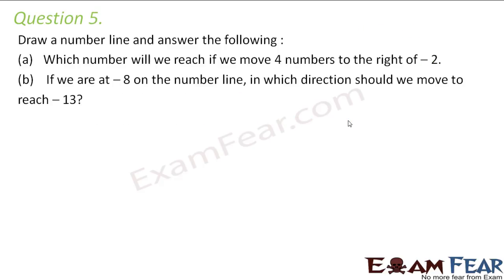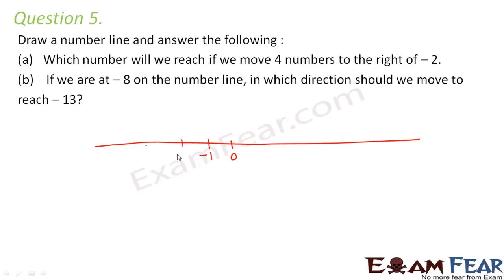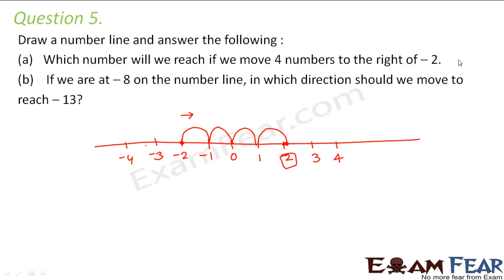Question number five: draw a number line and answer the following. Drawing a rough number line with zero in the center: which number will we reach if we move four numbers to the right of minus two? Starting at minus two and taking four jumps to the right — one, two, three, four — we arrive at plus two. So after moving four numbers to the right of minus two, we reach plus two.